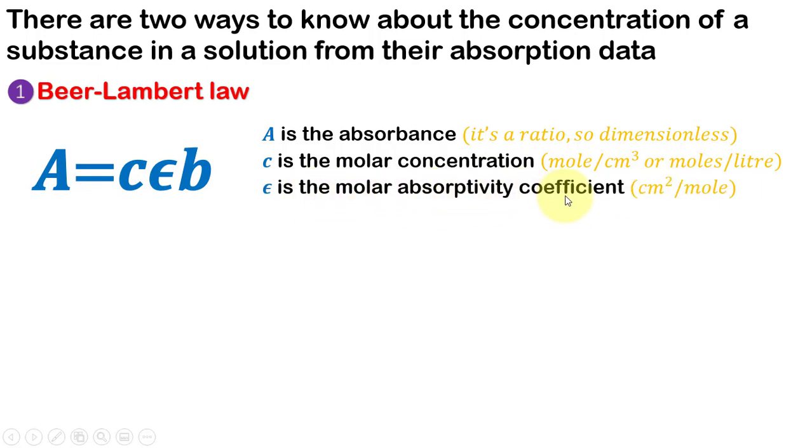Epsilon is the molar absorptivity coefficient that gives light absorbed by 1 mol of a molecule. This is measured in cm² per mol. b is the length that light travels in the solution and is usually measured in cm.